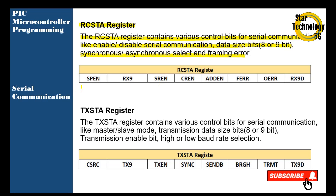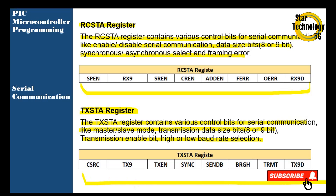You can see here is the RCSTA register — it is also an 8-bit register. The TXSTA register contains various control bits for serial communication like master/slave mode, transmission data size bit (8-bit or 9-bit), transmission enable bit, and high or low baud rate selection. We can set the baud rate or enable transmission from the TXSTA register.